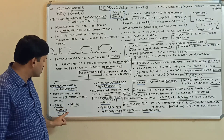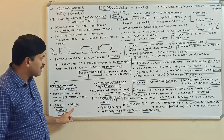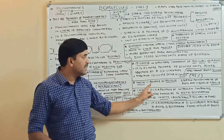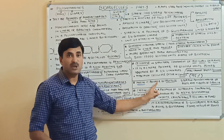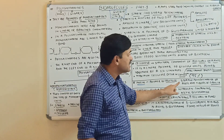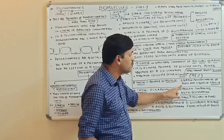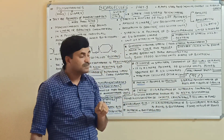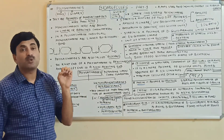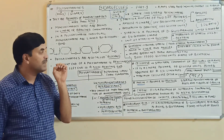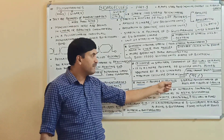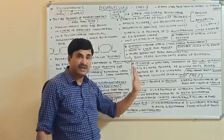We have talked about starch, glycogen, and cellulose. The next homopolysaccharide is inulin. Inulin is a polymer of fructose and it is the storage polysaccharide of the roots and tubers of dahlia.